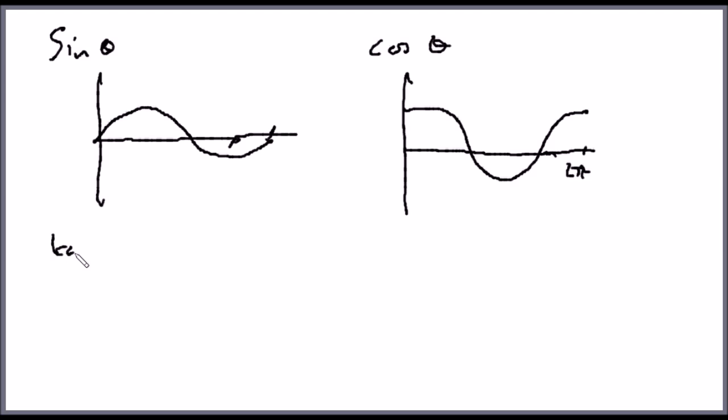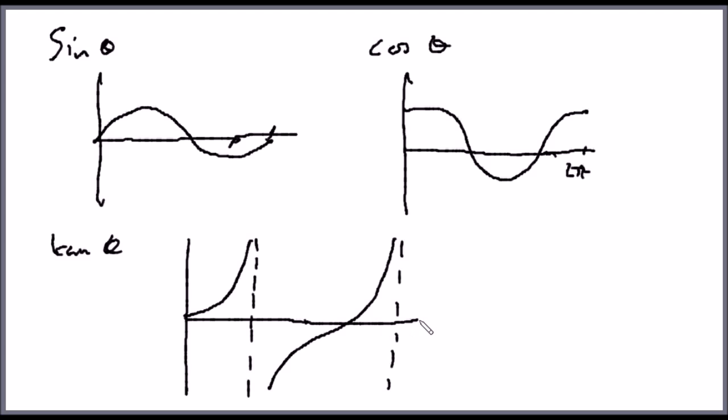And then tan theta. Let's just draw this out here. It approaches asymptotically at π/2. Same sort of story. And then it approaches asymptotically at 3π/2. And then it comes from negative up until 2π.